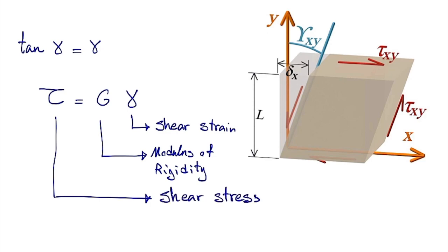These equations are valid in the case that we have stress acting in one direction. But in a more complicated real-world case, we might have situations where stresses are acting in three independent directions, like x, y, and z. I want to extend this concept into a more general case, which we call a three-dimensional stress element, and we call these equations the generalized Hooke's law.